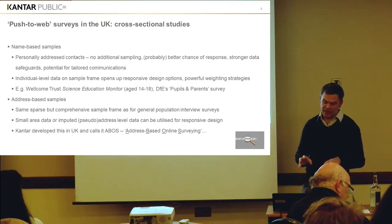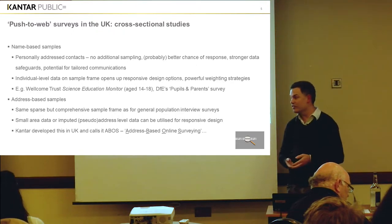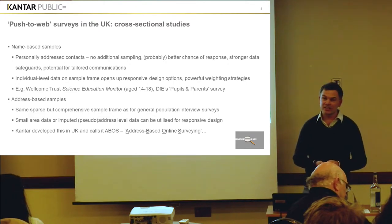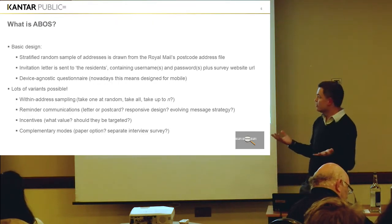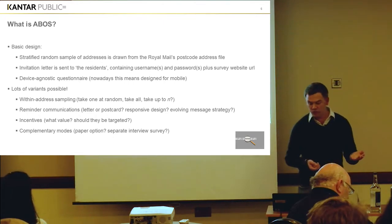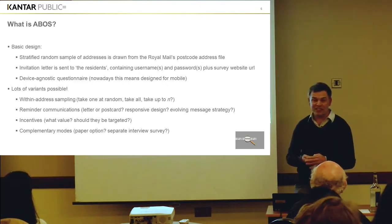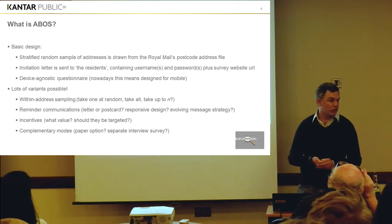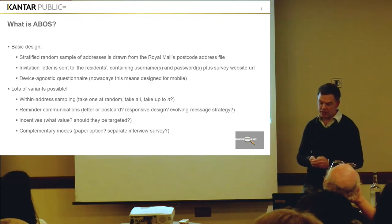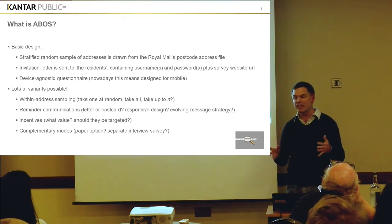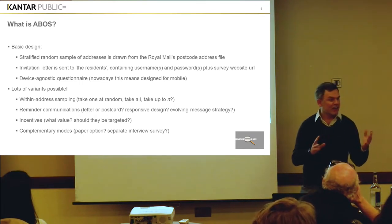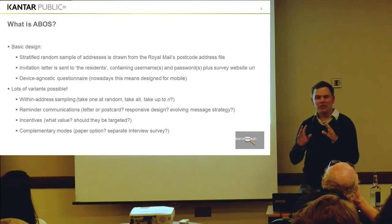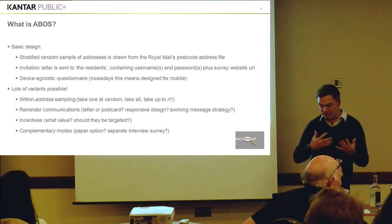Our approach with address-based samples we call ABOS within Kantar — address-based online surveying — and it's ultimately based on designs originally worked up in the United States by Donald Dillman and colleagues, adapted for the UK. What is ABOS itself? It's got a very simple basic design. A stratified random sample of addresses is drawn from the Postcode Address File. An invitation letter is sent to the residents of that address, containing one or more usernames and passwords plus the URL of a survey website. Questionnaires are always device-agnostic these days, which really means you've designed it to be done on a smartphone or at least to work fairly well there.